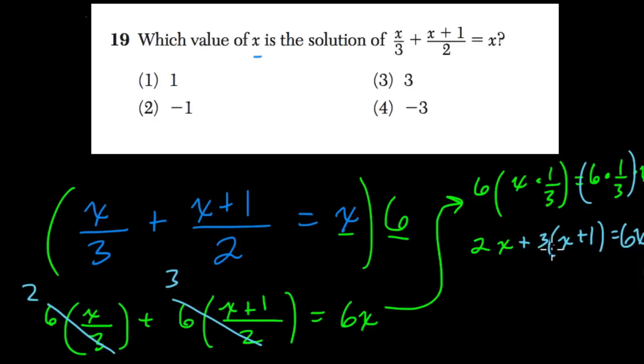Use my distributive property again in this term. So I rewrite the 2x. 3x plus 3 equals 6x. Add these two. That's 5x plus 3 equals 6x.